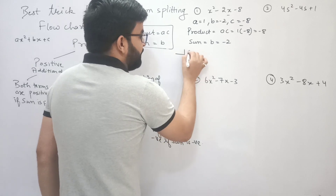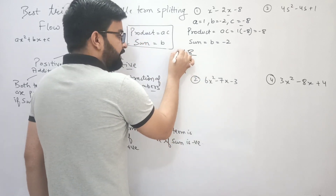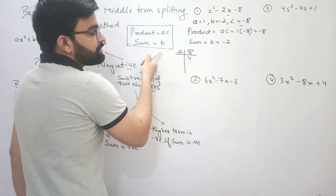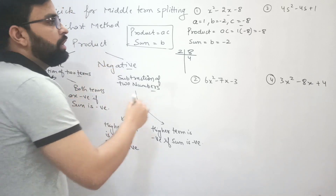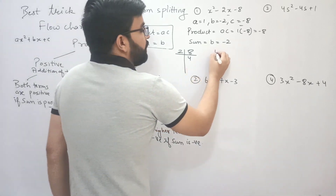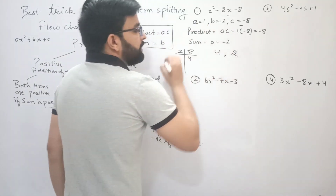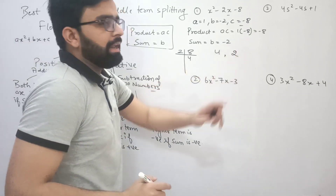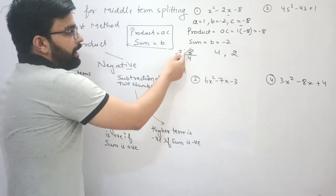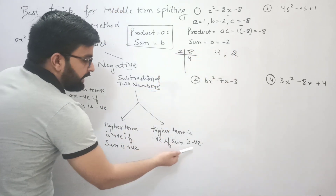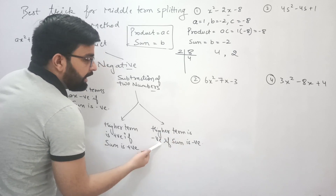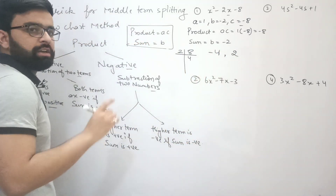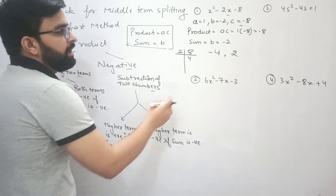We do the prime factorization of 8: 8 ÷ 2 = 4, 4 ÷ 2 = 2. So 4 and 2 are the two numbers — subtracting gives 2. Since the sum is negative, the higher term will be negative (-4) and the smaller term will be positive (+2). So the middle term splits as -4x + 2x.